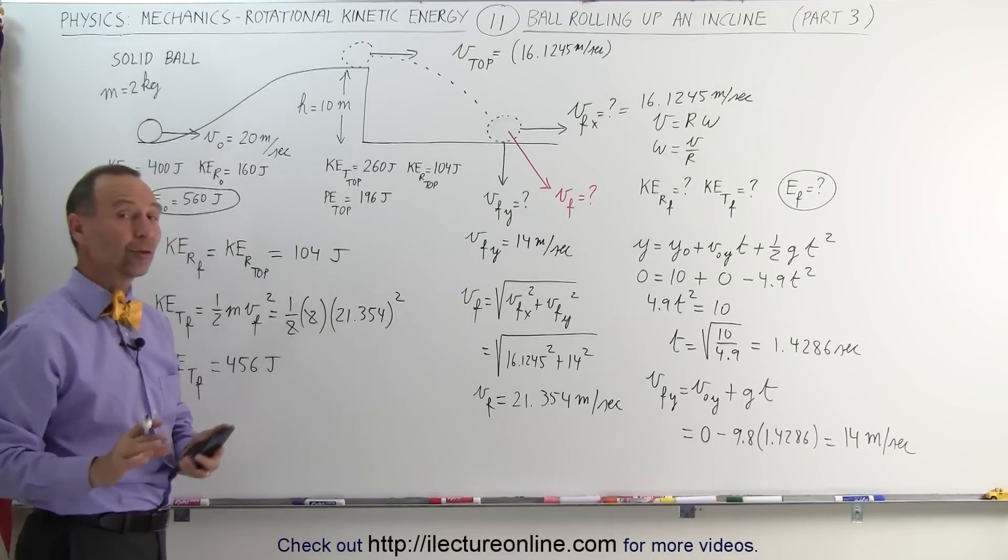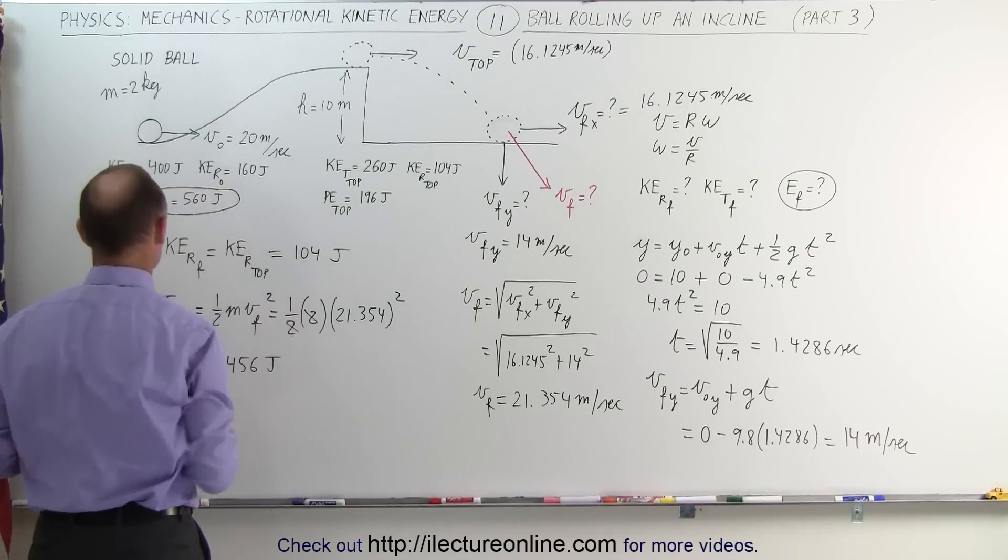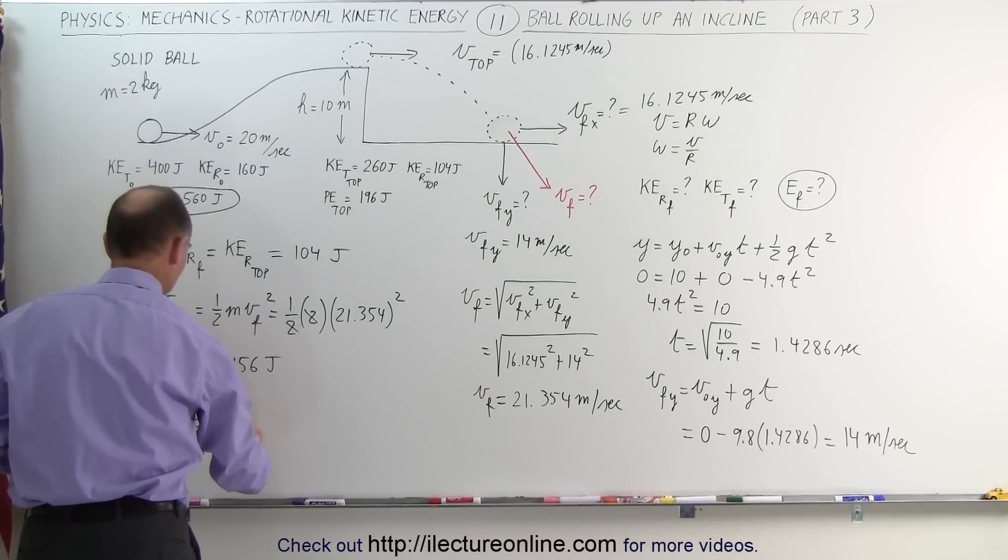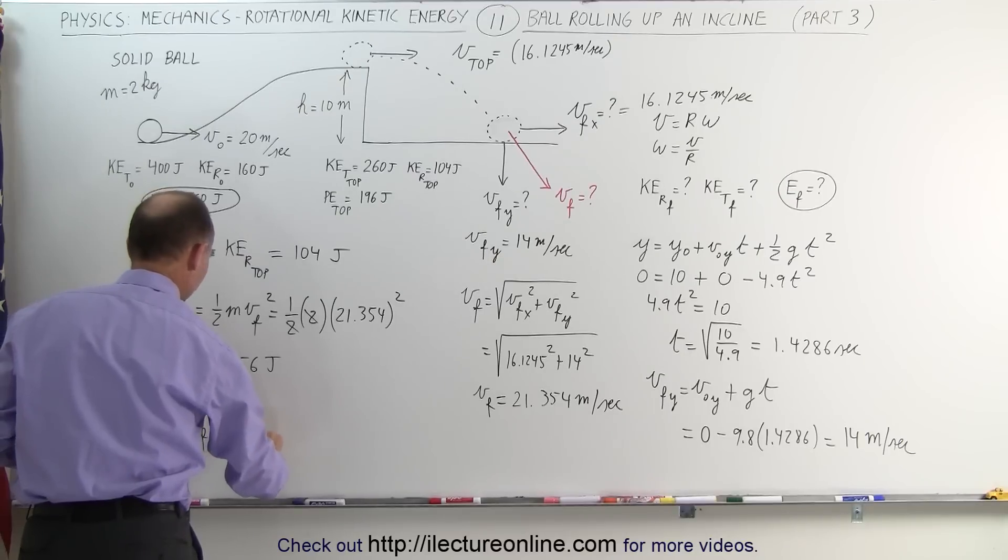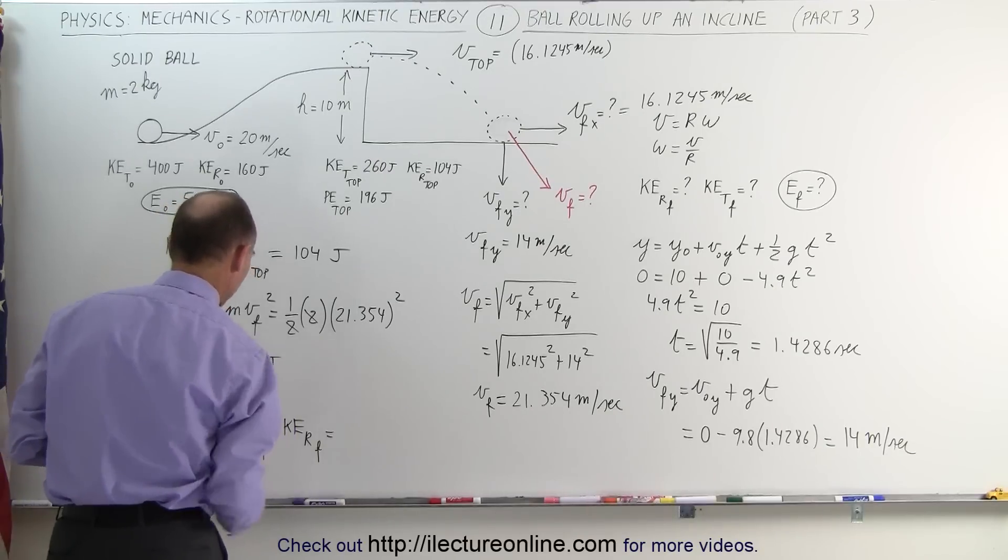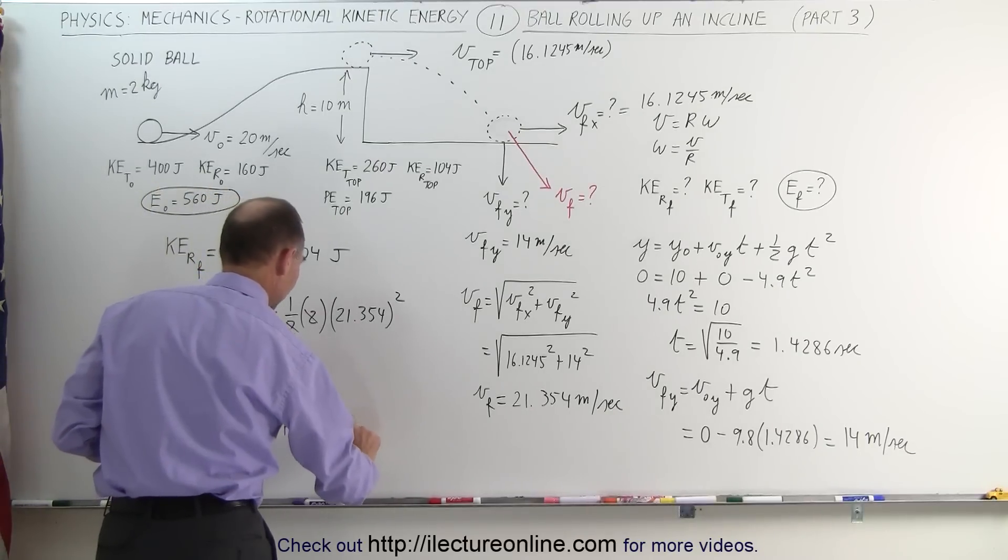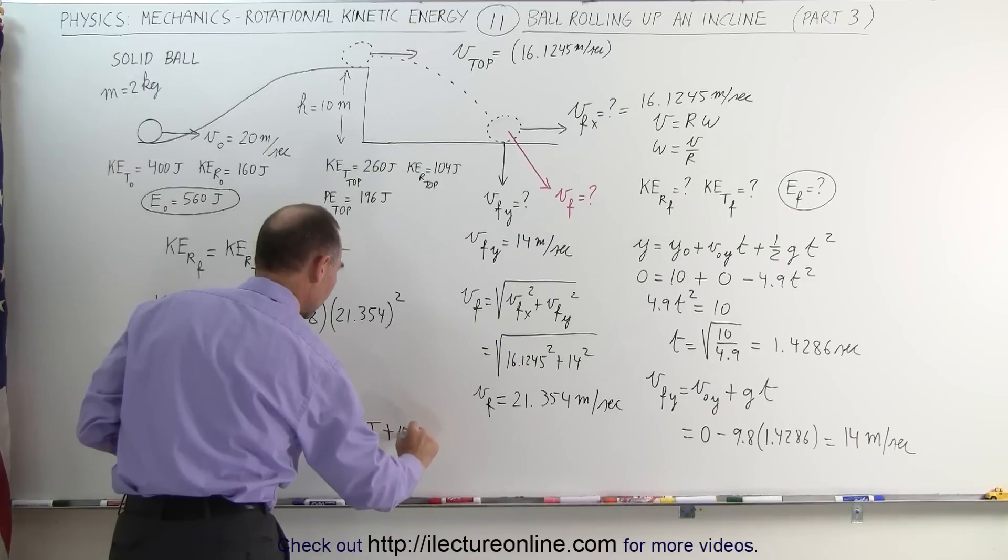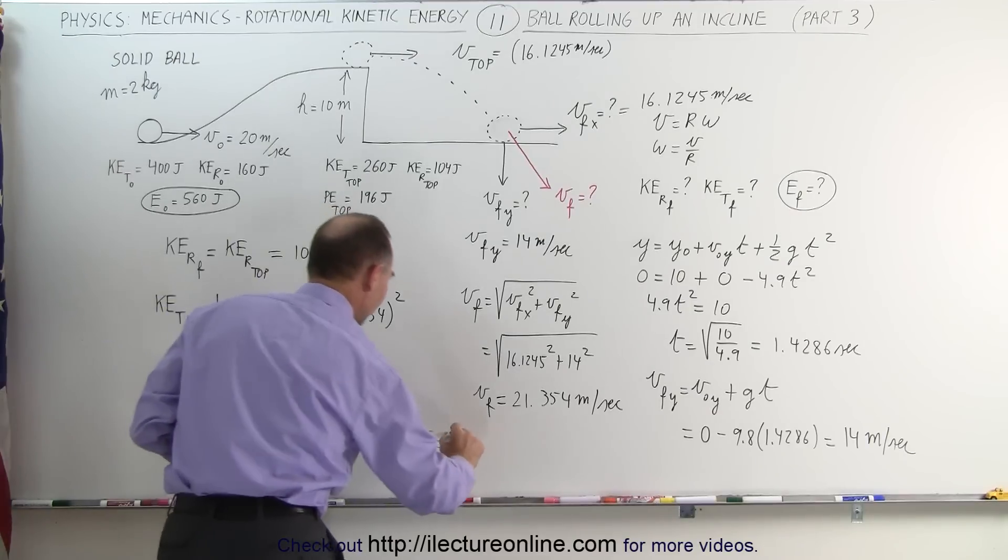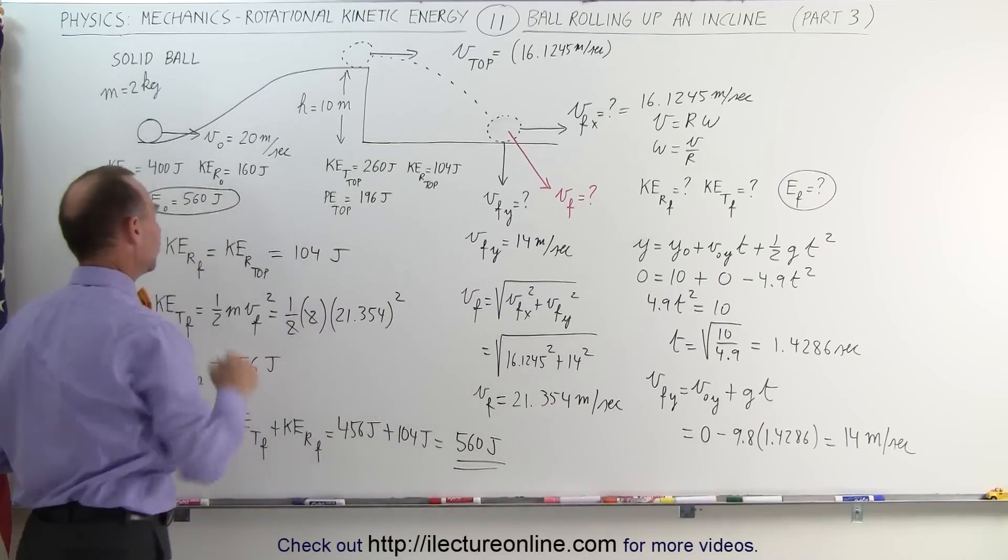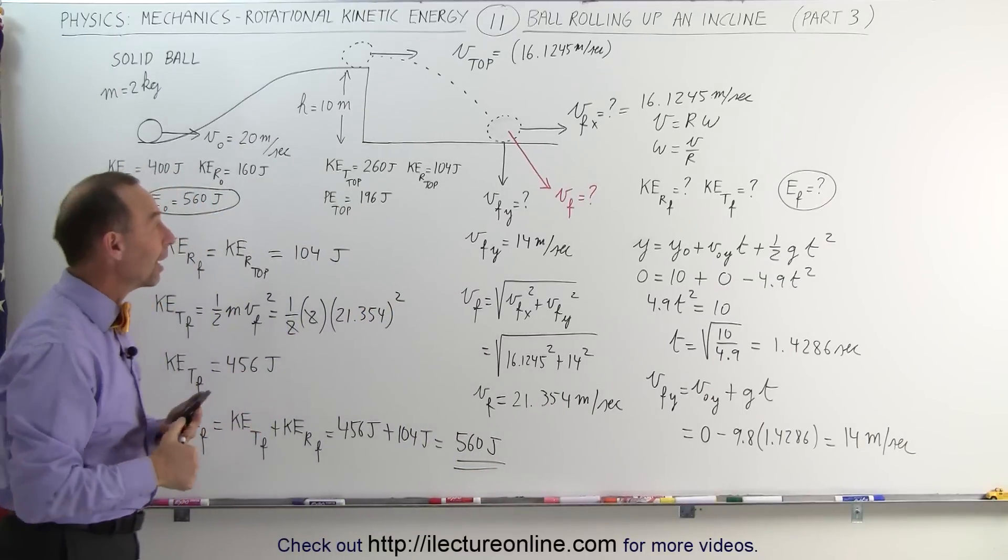Now let's add those two up together and see if we end up with the original 560 joules. So kinetic energy final is equal to kinetic energy translational final plus kinetic energy rotational final, which is equal to 456 joules plus the 104 joules, which is 560 joules.